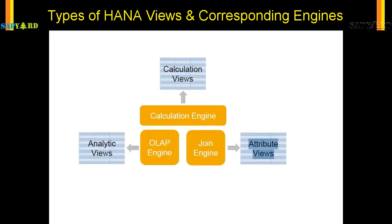This is the famous engine drag diagram, copied from SAP's PPT. It is very clear here: the OLAP engine is used for the analytical views, the join engine is used for the attribute view, and the calculation engine is used for the calculation views. You should remember this diagram.